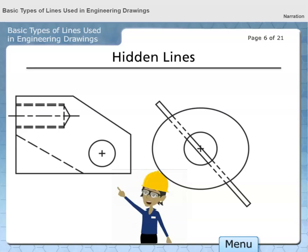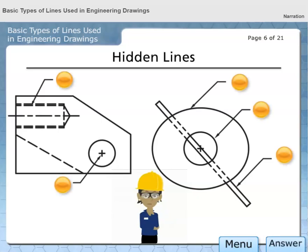Hidden lines represent an object's invisible edges and outlines. These features can't be seen from the drawing's view. These lines appear as thin width lines with short dashes. Select the button that best represents a hidden line.